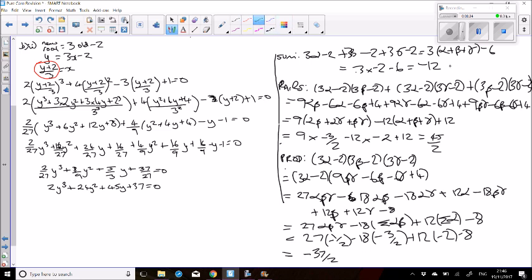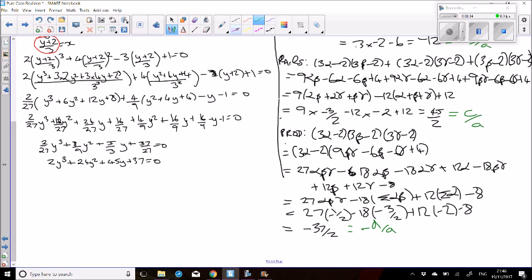And then we use our facts again. Sum is minus b over a, sum of the pairs is c over a, product is minus d over a. Put those three things together.